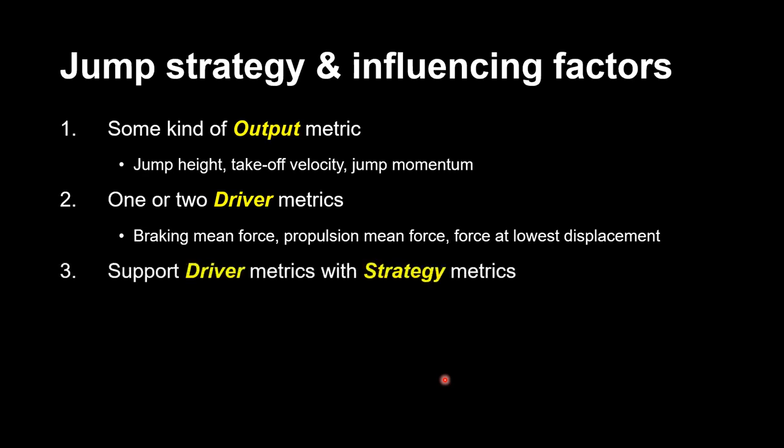Try and support any driver metrics with strategy metrics. These give us insight into what strategy the jumper uses to perform that particular movement—things like the braking time, propulsion time, or total movement time. We might think about how far did the jumper squat down. If the down displacement increases but the braking time decreases, then we know the downward velocity has increased, so that negative impulse has increased. They'll probably be bouncier, so they'll probably be able to jump much higher.